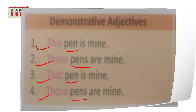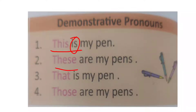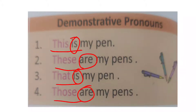In the same way, when 'this', 'that', 'these', and 'those' are not used with a noun, or are used with a verb, they are called demonstrative pronouns. For example: 'This is...' — here 'is' is a verb. 'These are', 'That is', 'Those are' — the demonstrative words are used with verbs, so they are demonstrative pronouns. This is the difference between demonstrative adjective and demonstrative pronoun.